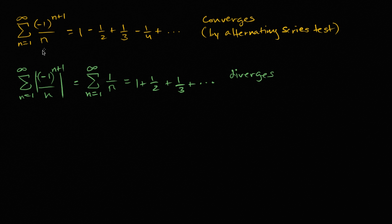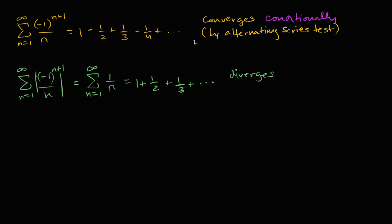So when you see a series that converges, but if you were to take the absolute value of each of its terms and that diverges, we say that this series converges conditionally. It converges conditionally — the condition being, I guess, that we're not taking the absolute value of each of the terms. And if something converges when you take the absolute value as well, then you say it converges absolutely.